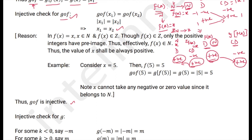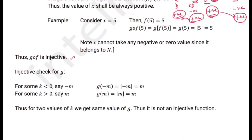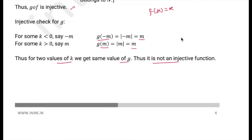For the injectivity check of g alone: g(-m) = m and g(m) = m, so two different values of k yield the same value of g(k), meaning g is not injective. Therefore, f(x) = x and g(k) = |k| are the two example functions that satisfy the given condition that g∘f is injective but g is not.